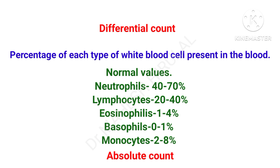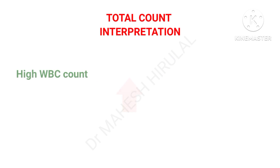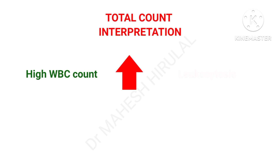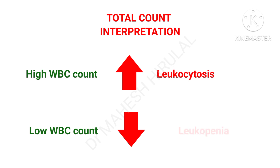The absolute values of these differential counts can also be measured by a hematology analyzer. If WBC count is increased, it is called leukocytosis. If WBC count is reduced, it is called leukopenia. This is the first step in interpretation of WBC studies in CBC.